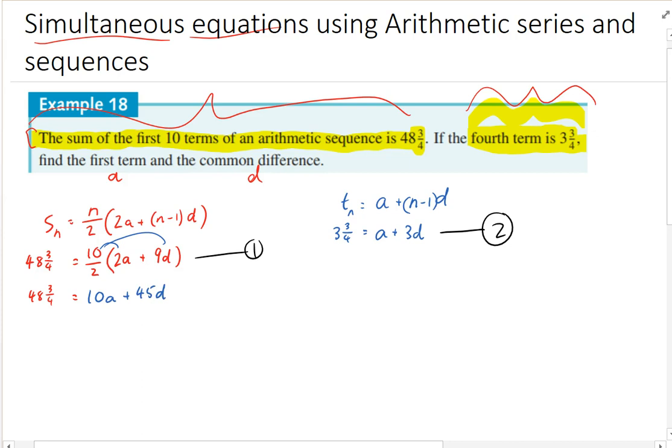All right. That's a better equation. I'll just rewrite that in blue. All right, that's way better. Let's use that one. So now I've got 48 and 3 quarters equals 10a plus 45d.